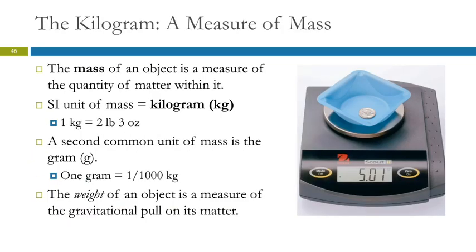The SI base unit for mass is a kilogram. A kilogram is a little over 2 pounds. So if you weigh 100 pounds, in kilograms it would be more like 50 kilograms. A unit we use more commonly in chemistry is the gram, because a kilogram is big. We're not going to do experiments with one kilogram — two pounds of chemical would be really wasteful. So we use grams a lot in chemistry.